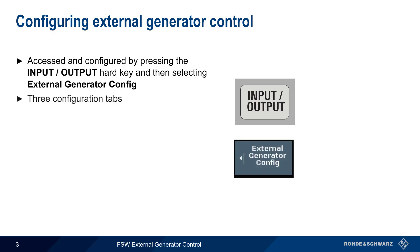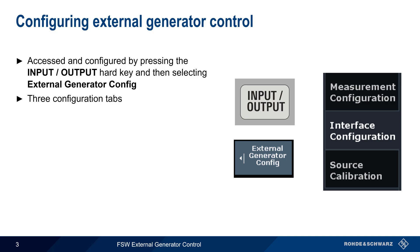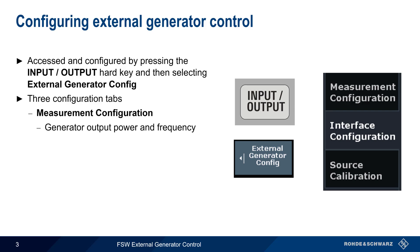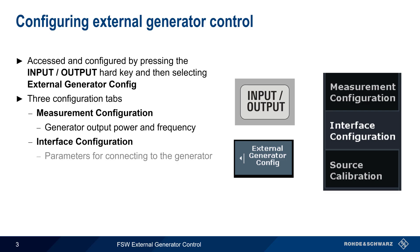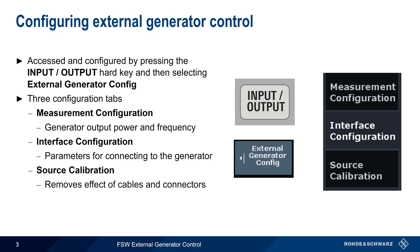There are three configuration tabs under External Generator Control. Measurement Configuration is used to define the generator output power and frequency. The Interface Configuration tab is where the connection method and generator parameters are configured. And Source Calibration is used both to remove the effects of cables and connectors, as well as to enable normalization of the measurement results.